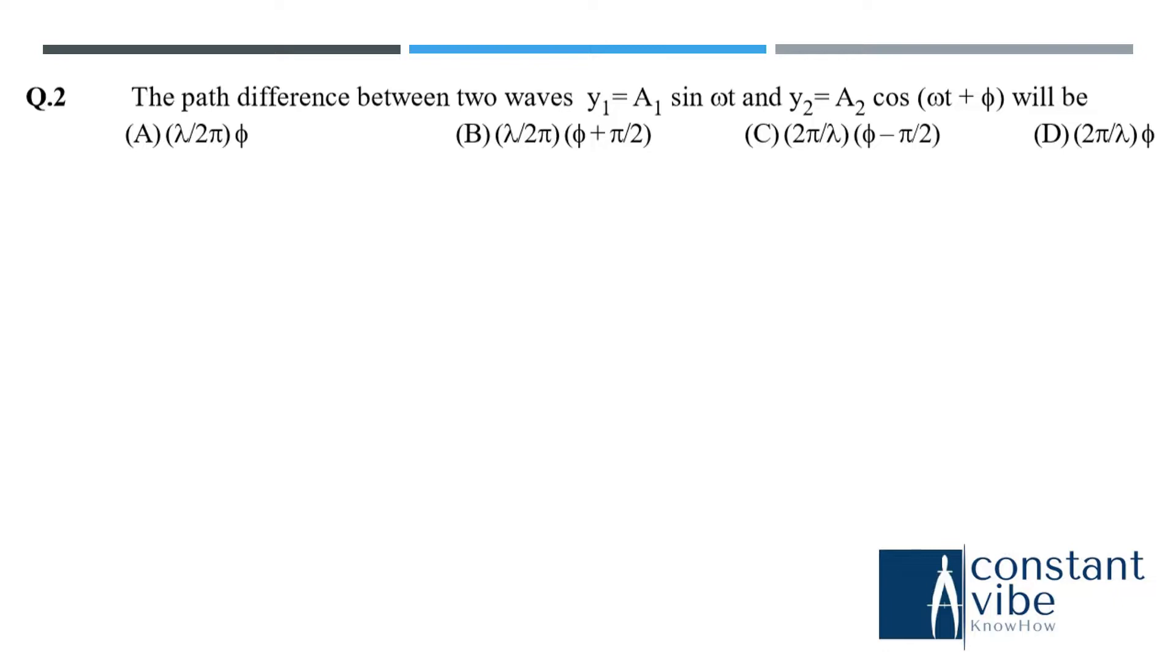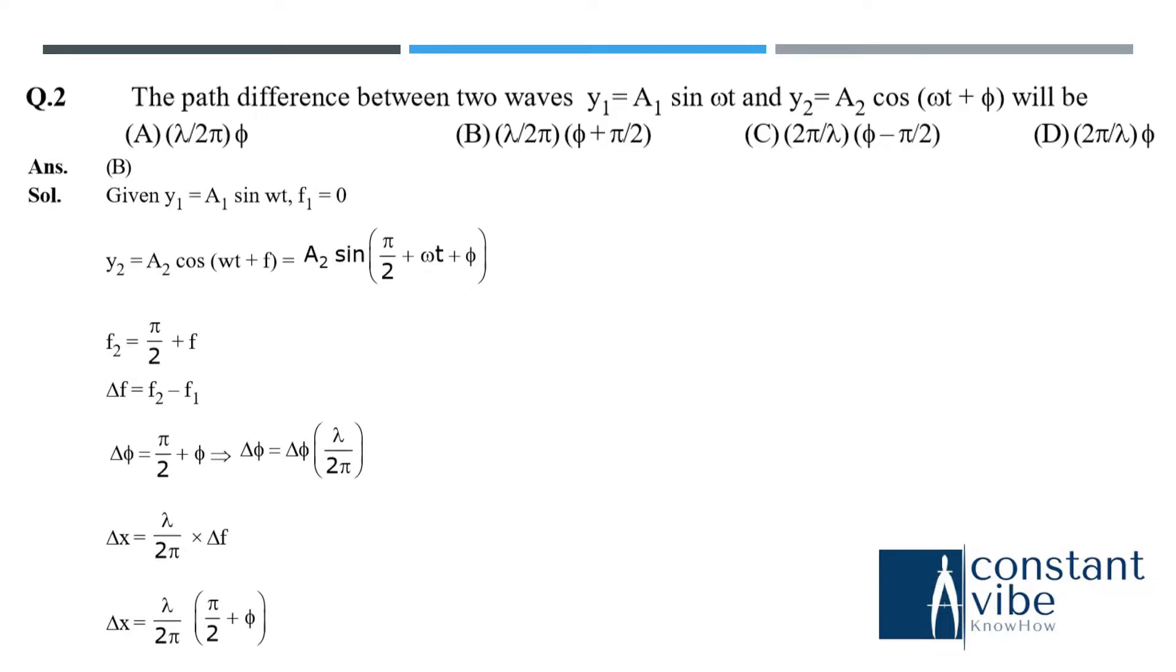Question number 2: the path difference between two waves y1 equal to A1 sin omega t and y2 is equal to A2 cos omega t plus theta will be. Here B is the answer. The solution method explained here, you can go through this one you will get the clear answer.